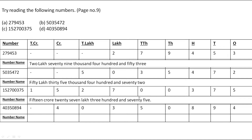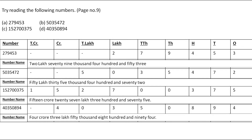In the next number, the first digit comes in the Crore group. Then zero and three are in Lakh, then 50 is in Thousands, and then eight, nine, four are in the Ones group. So the number name is 4 crore, 3 lakh, 50,894.